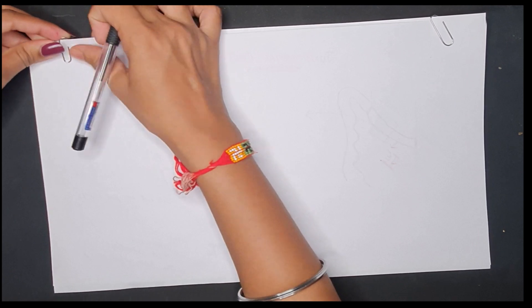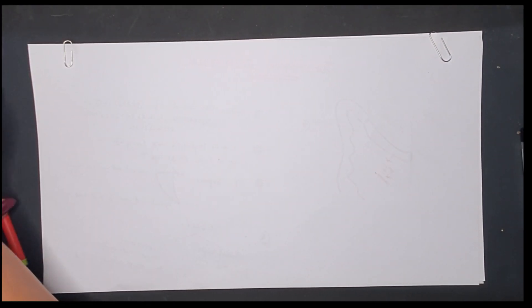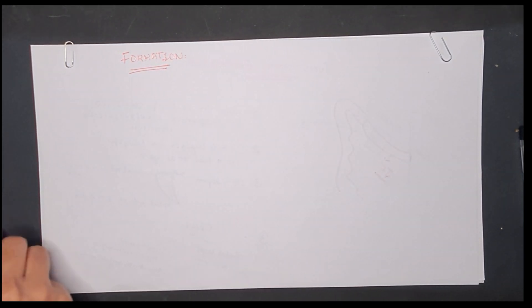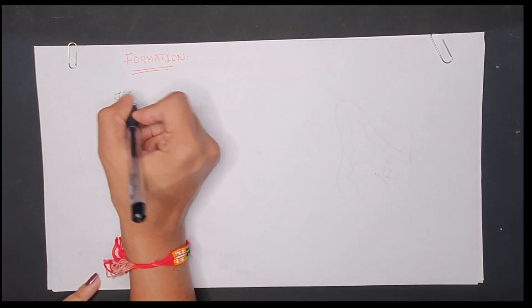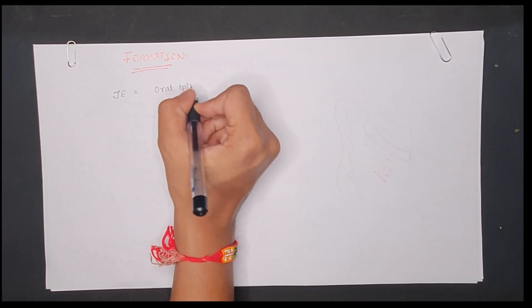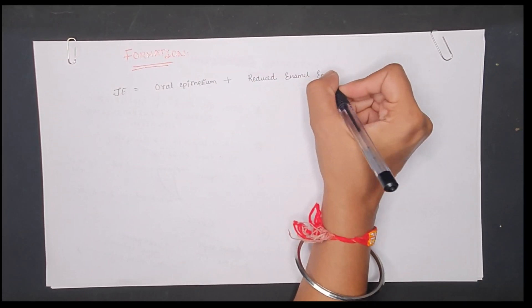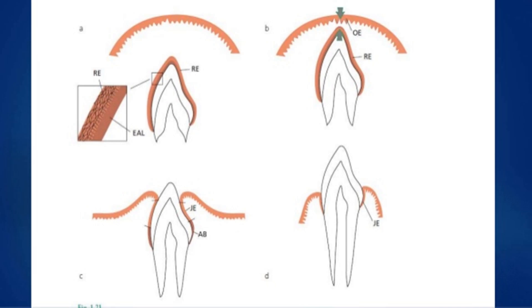Let's discuss the formation of the junctional epithelium. The formation of junctional epithelium is by the oral epithelium of the enamel organ and the reduced enamel epithelium. However, if we see in the image, the combination of both forms the junctional epithelium.